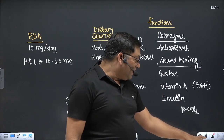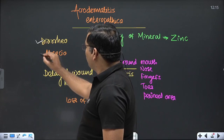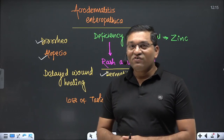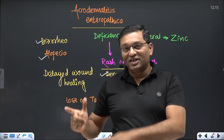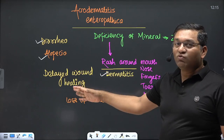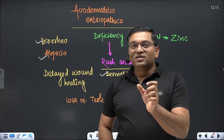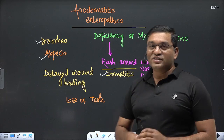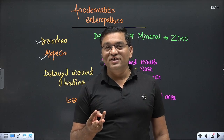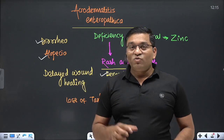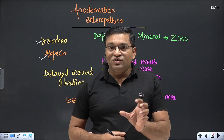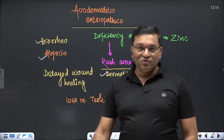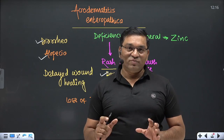A useful mnemonic: whenever there is DAD — diarrhea, alopecia, and dermatitis — it is due to zinc deficiency. Whereas triple D — diarrhea, dementia, and dermatitis — indicates niacin deficiency. Zinc deficiency features include diarrhea, alopecia, dermatitis, and delayed wound healing. Zinc is confirmed deficient by checking serum zinc or vitamin A levels. This concludes the discussion of zinc deficiency and acrodermatitis enteropathica.